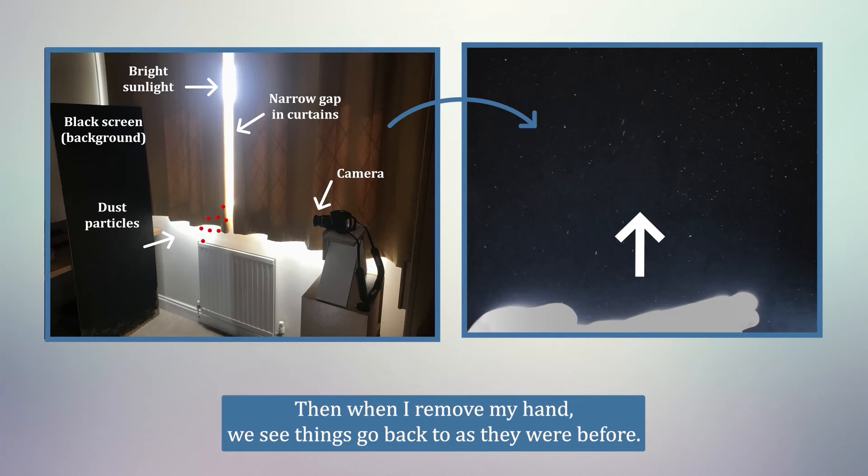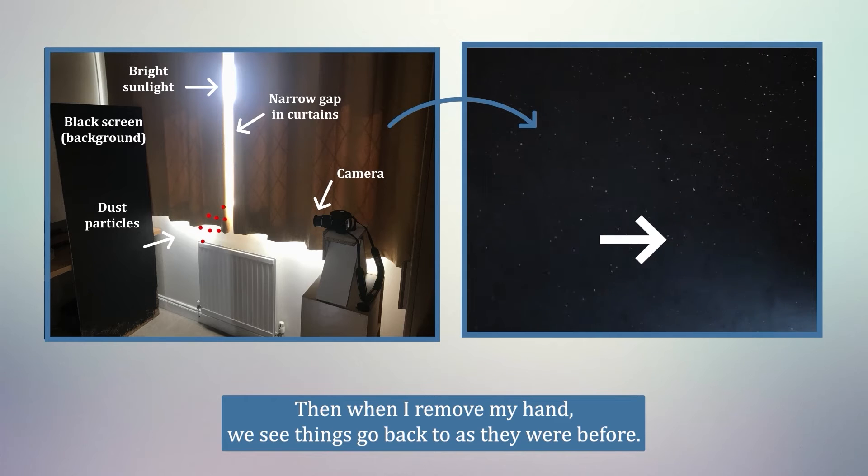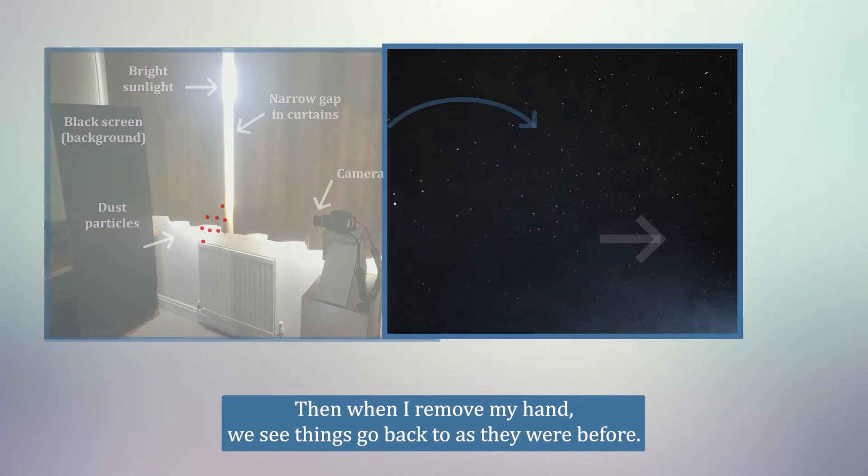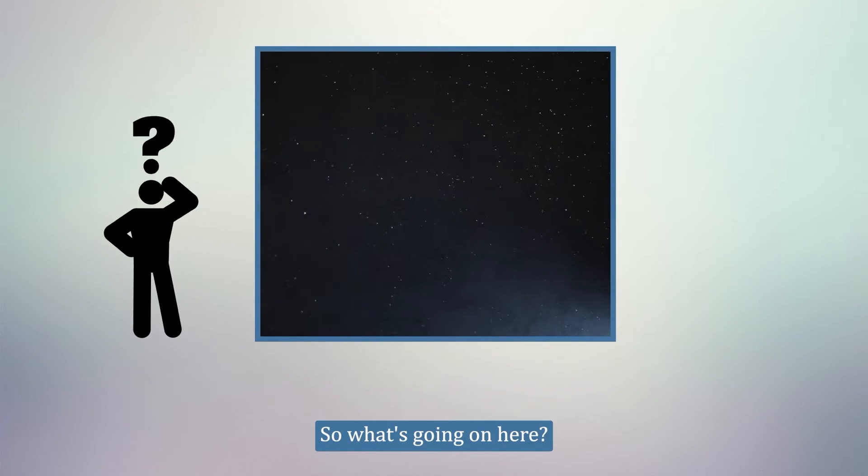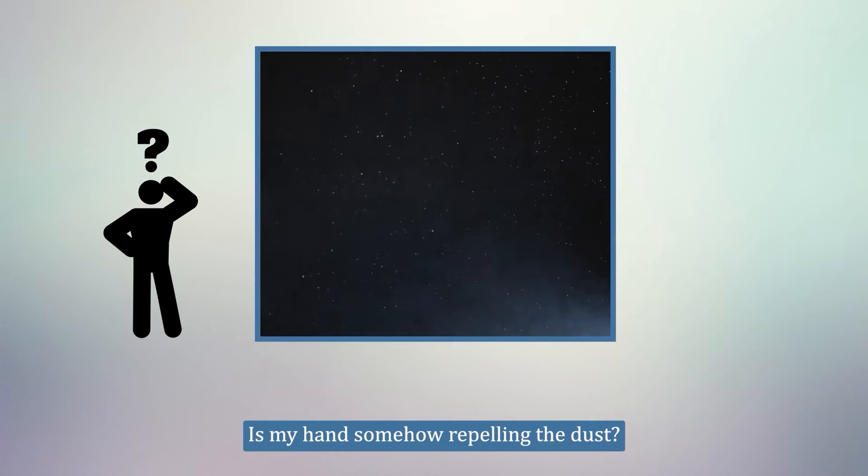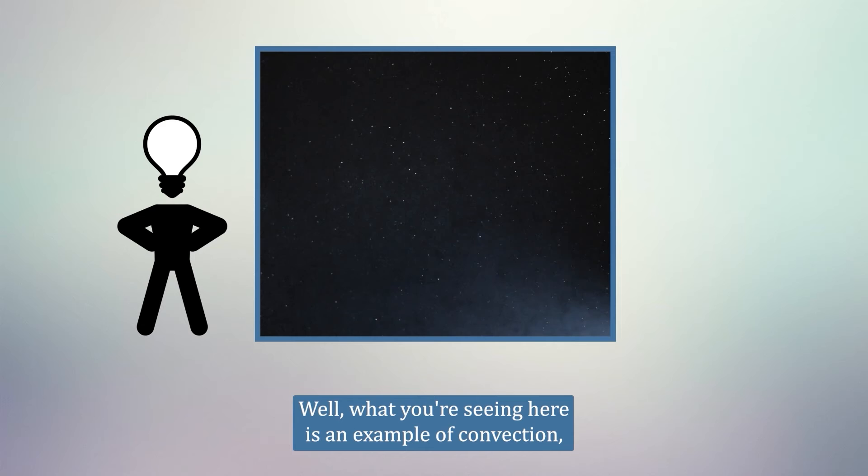Then, when I remove my hand, we see things go back to as they were before. So what's going on here? Is my hand somehow repelling the dust? Well, what you're seeing here is an example of convection, meaning heat being transported by air flows.